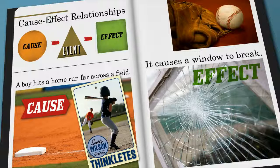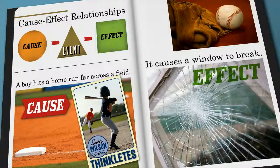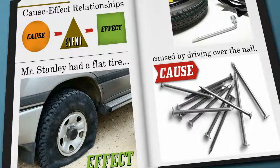In the real world, a cause always comes before the effect. In writing, however, an author may tell you the cause first, or they may tell you the effect first. The author may say the character had a flat tire, which is an effect caused by driving over the nail.